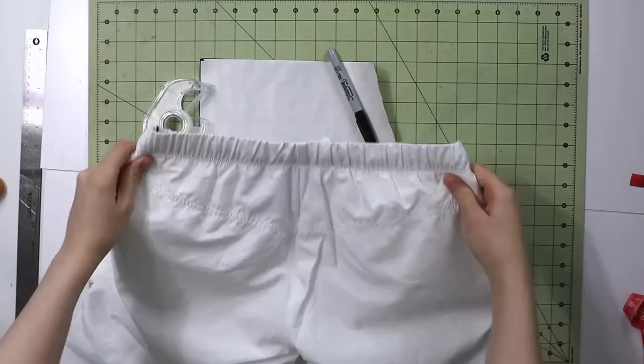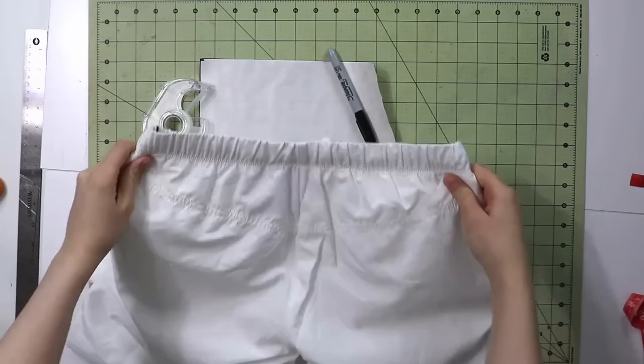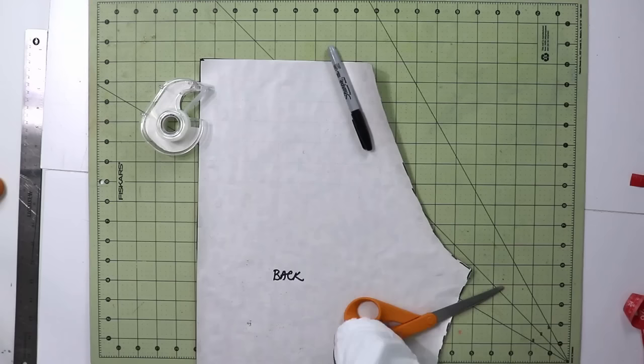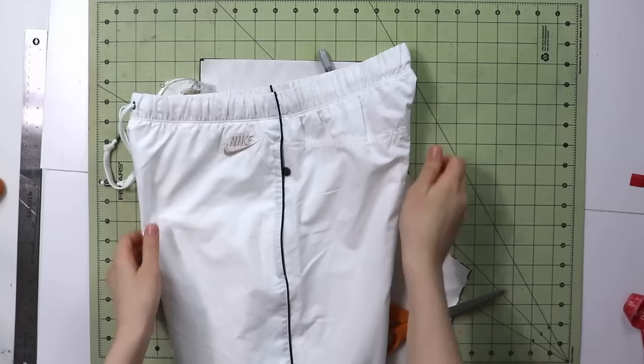Now if you look at your pants flat it looks like the top piece is just flat and straight but then if you turn it sideways you will see that when it gets to the center back seam it goes up. Now my pattern currently does not reflect that increase so that's what we need to take care of.